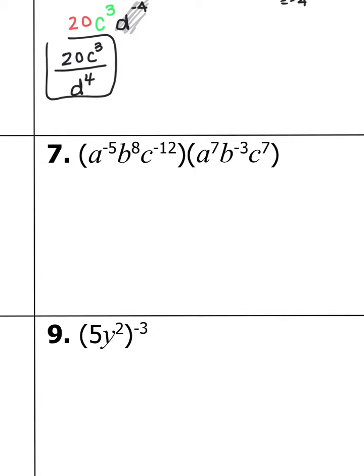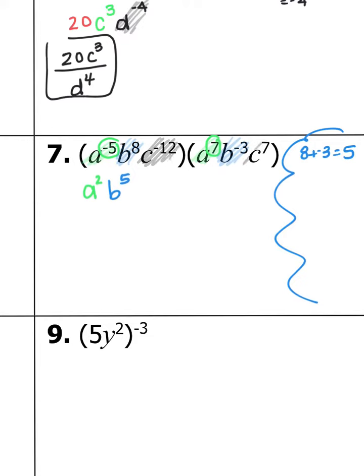For number 7, we have a to the negative fifth and a to the seventh, and they're being multiplied so we add. Negative 5 plus 7 is 2, so we have a squared. Then we have b to the eighth and b to the negative third. 8 plus negative 3 is 5, so that makes b to the fifth. Lastly, we have c to the negative twelfth and c to the 7. Negative 12 plus 7 is negative 5, so we have c to the negative fifth.